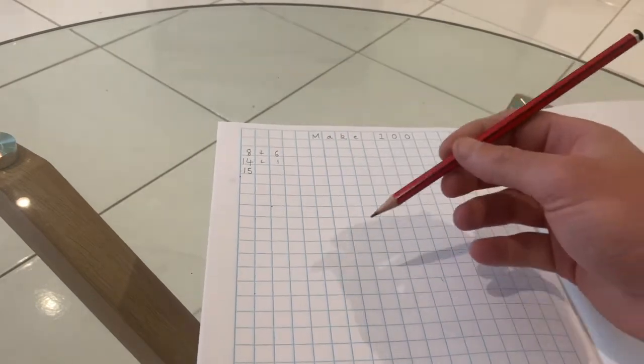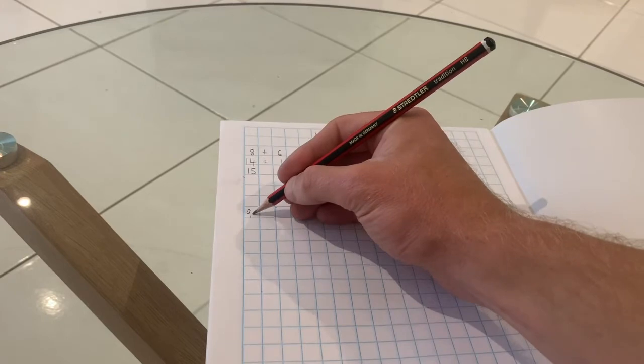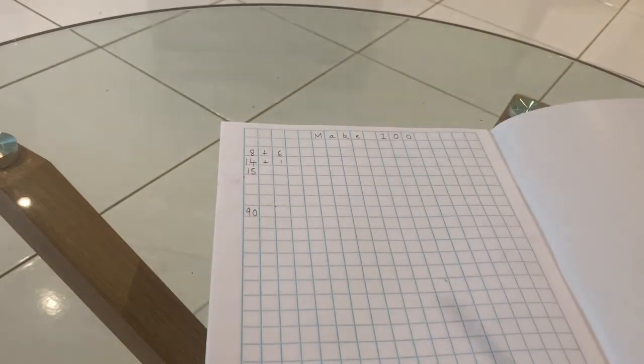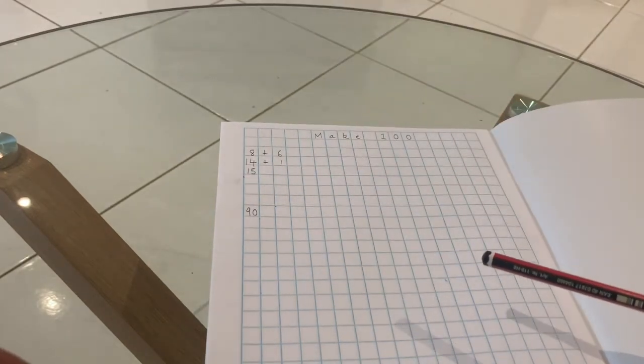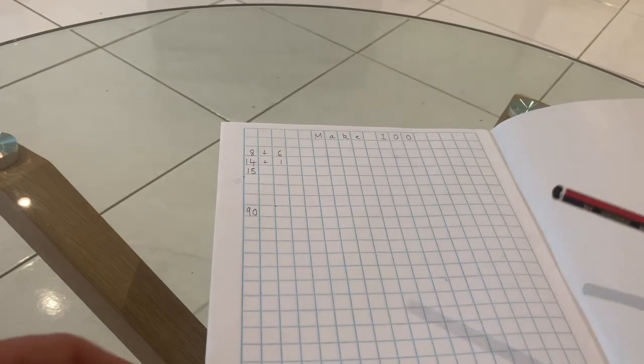To win the game, you need to get exactly 100. At some point, you're going to get into the 90s and you will need to roll exactly 100. So sometimes you'll have to roll the dice multiple times. Let me show you how that's going to work.